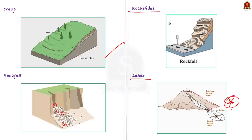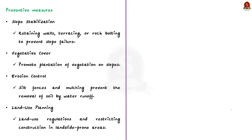Now moving on to measures to prevent landslides. First is slope stabilization — strengthening unstable slopes using techniques like retaining walls, terracing or rock bolting to prevent slope failure. Second is bringing vegetative cover — promoting plantation of vegetation on slopes, because roots help bind the soil and stabilize the slopes. This is why Kerala Forest Department plans to plant bamboo trees on the roadside.